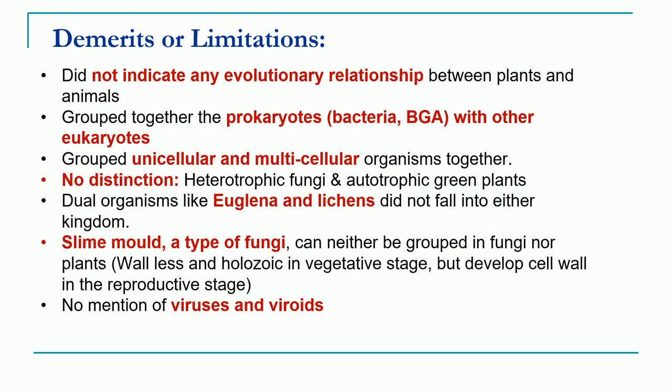Heterotrophic fungi and autotrophic green plants were clubbed together into the single kingdom Plantae. Certain organisms like euglenoids and lichens were not grouped into any kingdom — neither Plantae nor Animalia. Slime mold, a type of fungi, was neither grouped in fungi nor in plants because it was wall-less and holozoic in the vegetative stage and developed a cell wall only in the reproductive stage. Additionally, there was no classification of viruses and other viroids in this system.